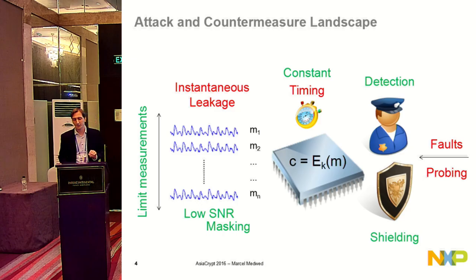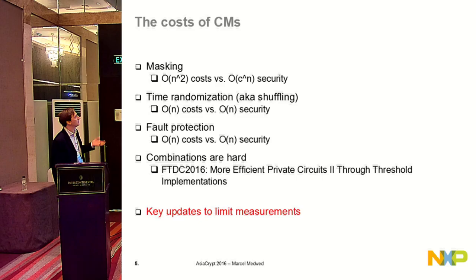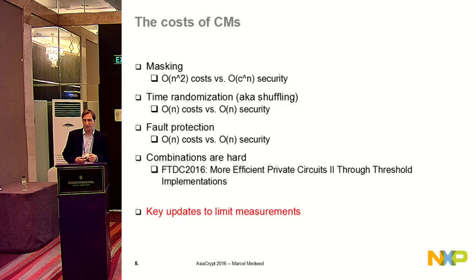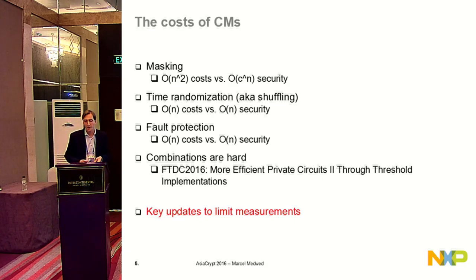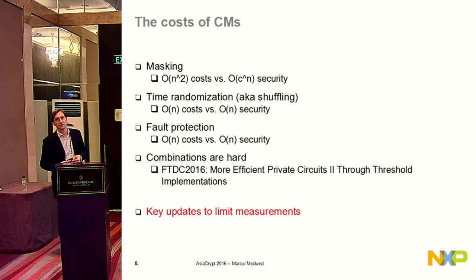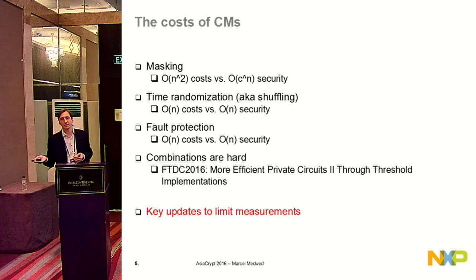Another thing we can do is limit the number of measurements an adversary can make, or in other words, limit the key usage. Well-studied countermeasures include masking, whose costs are quadratic in the number of shares for a general circuit but security is exponential in the number of shares. Time randomization and fault protection are both linear. A real device must be protected against all of them, so you can multiply the costs — which might be too much for a low-cost device. Also, combining those countermeasures is not straightforward because sometimes the goals contradict each other: adding redundancy might give more information in the trace, which is not what you want for side-channel protection.